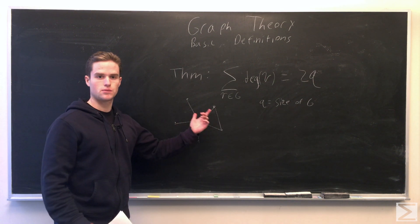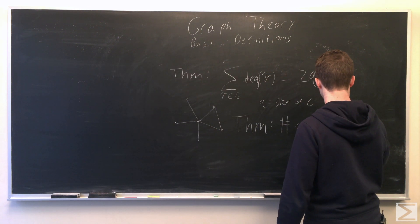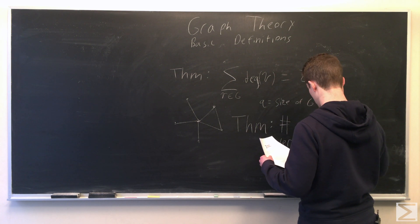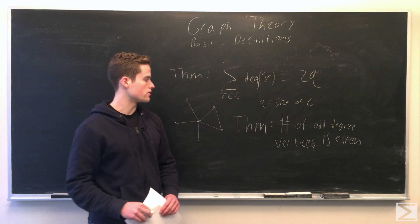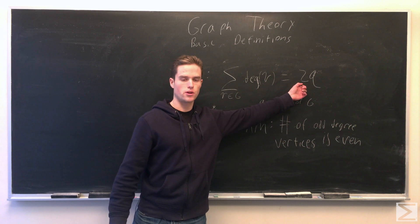And so from this simple theorem, we're going to say one other thing. We're going to show the number of odd-degree vertices has to be even. If you look at this equation mod 2, on the right, it's 0 mod 2.